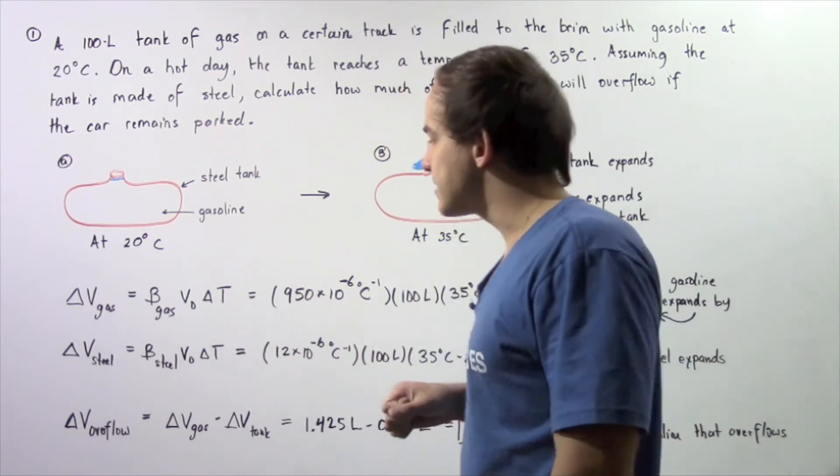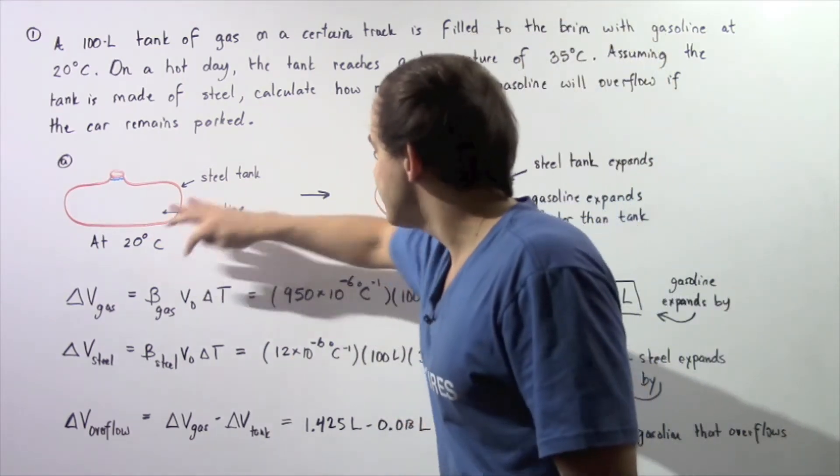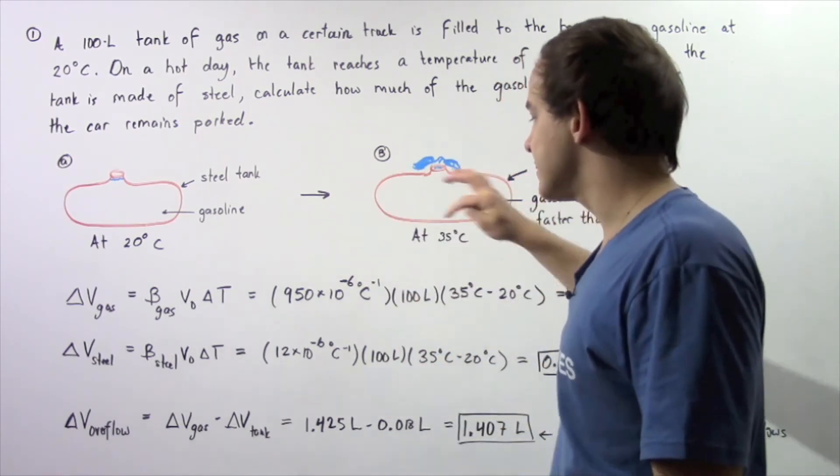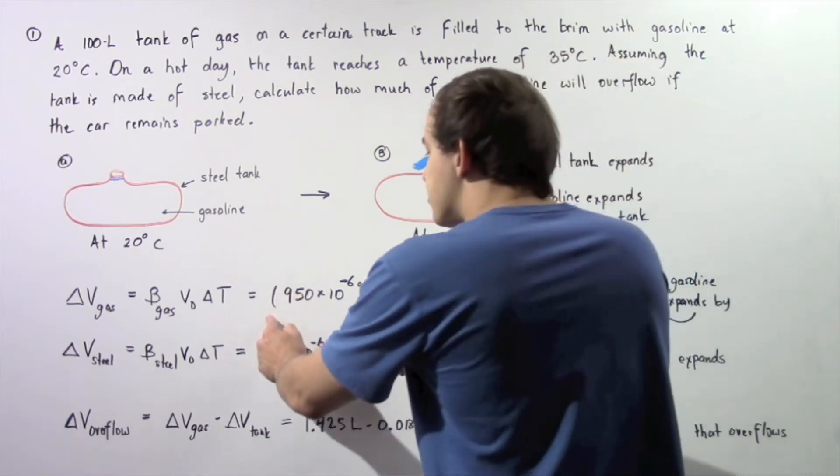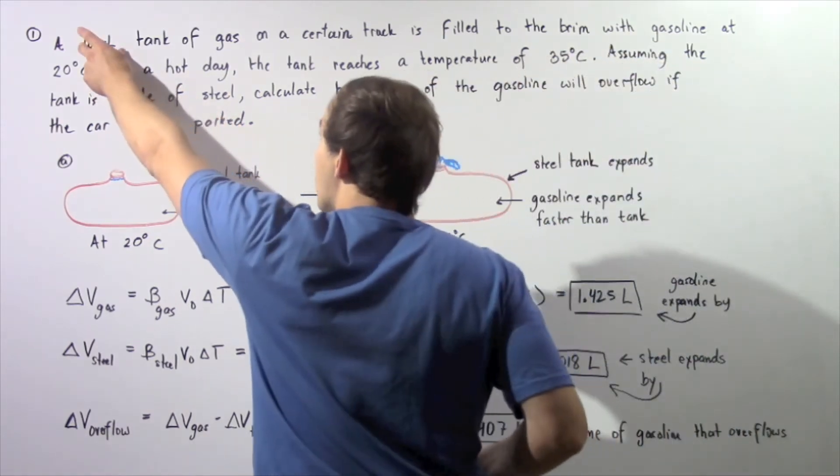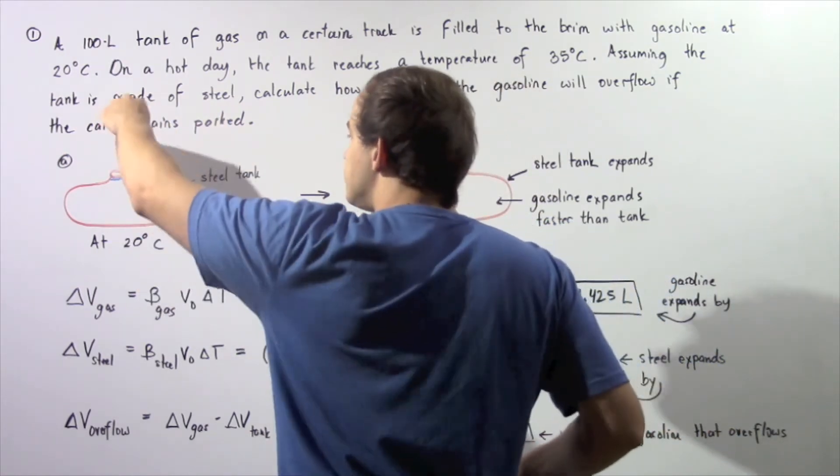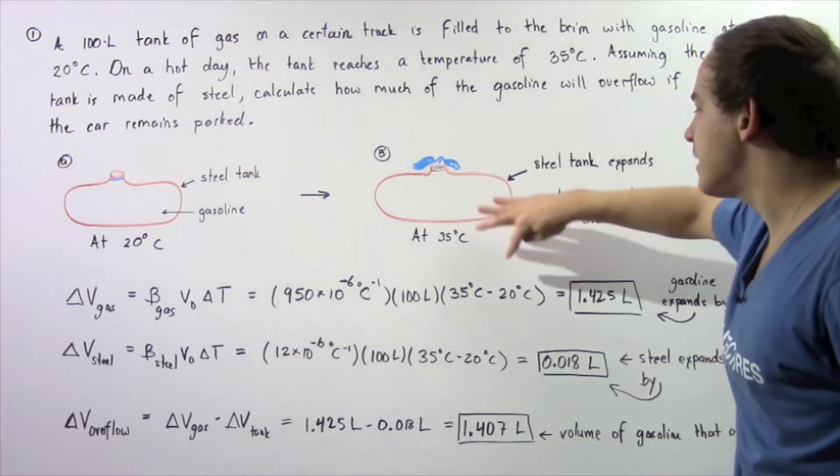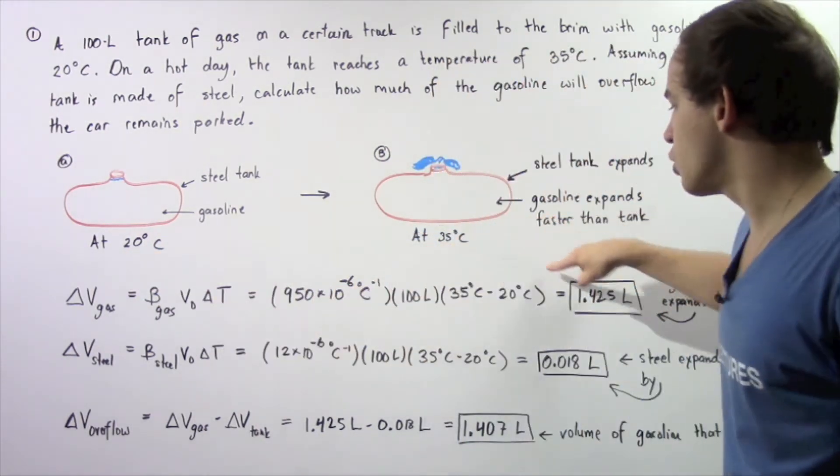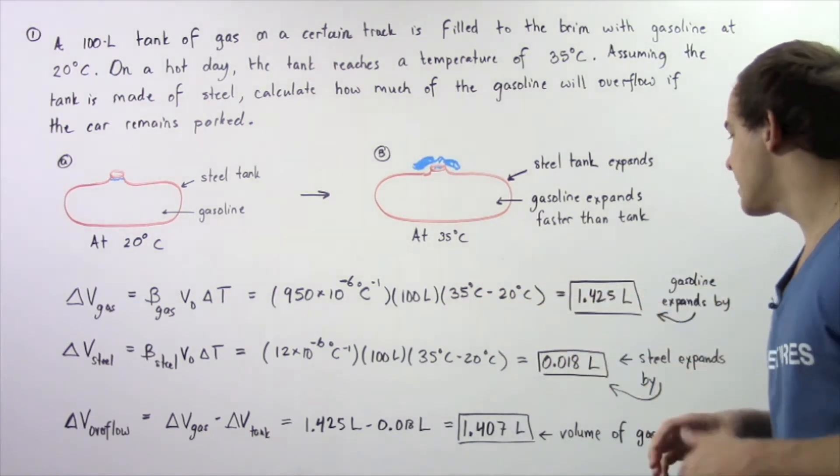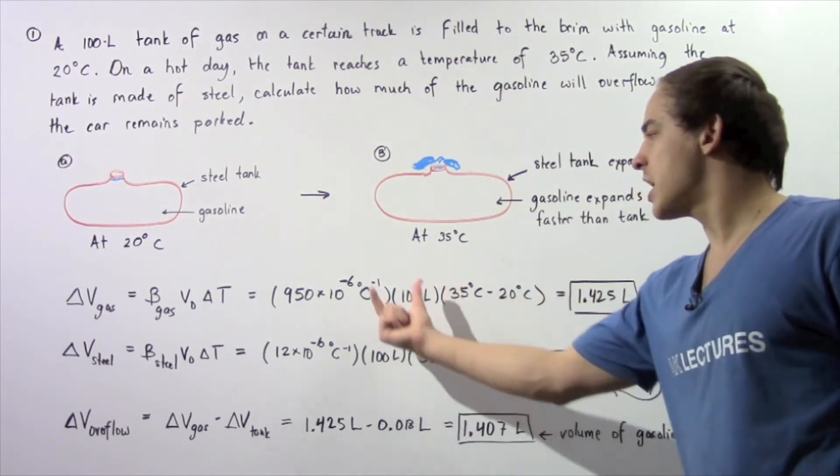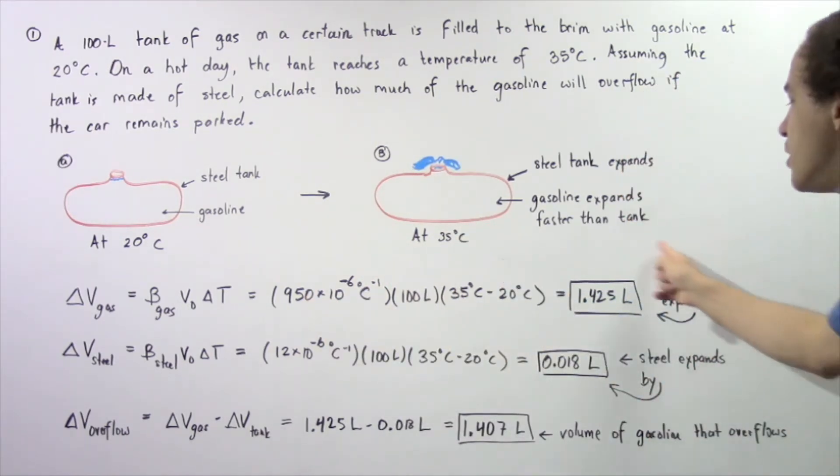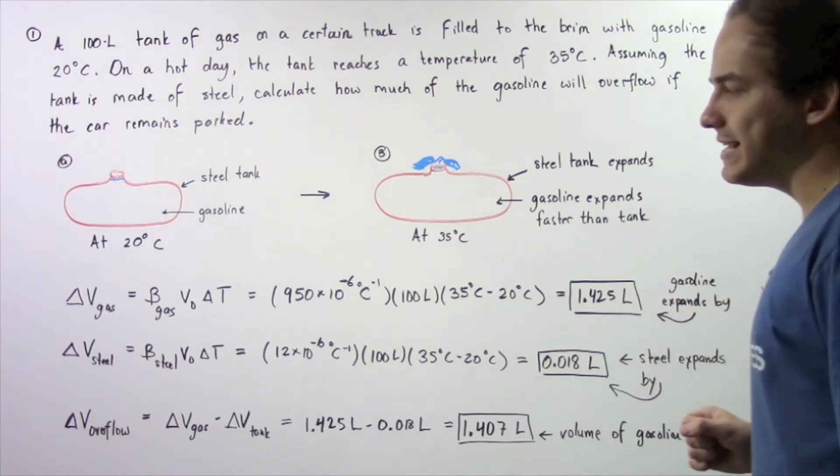Now, this value, we can look up in a textbook or online and it turns out to be 950 times 10 to the negative 6 Celsius to the negative 1. So we multiply this times initial volume of 100 liters because the tank is filled to the brim multiplied by our final temperature of 35 minus initial temperature of 20. So we get a difference of 15 degrees Celsius. So 15 times 100 times this gives us 1.425 liters. This is by how much our gasoline expands.